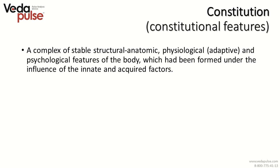Each time we start with basic notions for those who have just joined us. A constitution is a complex of stable structural, anatomic, physiological and psychological features of the person, which had been formed under the influence of innate or acquired factors. It is important to know the constitution type of the patient because peculiarities of the constitution type form a tendency to certain pathogenic processes and diseases. Correction of the constitution features allows to prevent development of the disease.